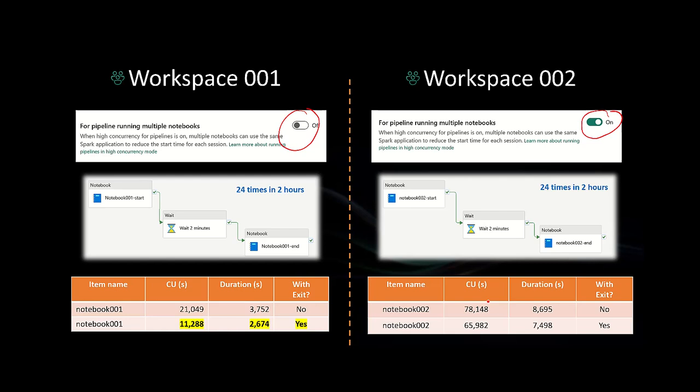I realized this setting is not something I need to enable for this scenario — though that doesn't mean you should never enable it. You have to always check whether it has added value to your environment. For the second test, I know we generally don't need to add an exit command at the end of a notebook, but I added it. I did the same test and guess what — I ended up with 11,000 CU usage, which is much better than my previous settings. Even the duration went down.